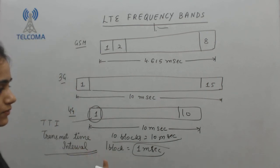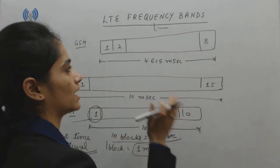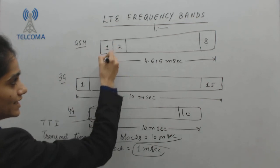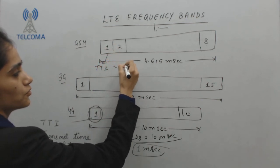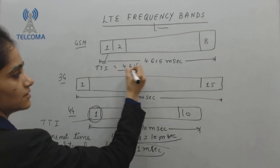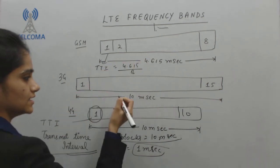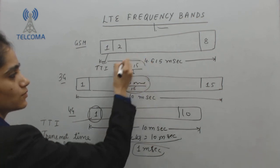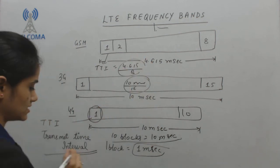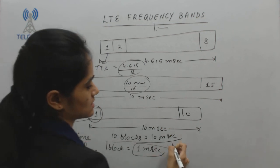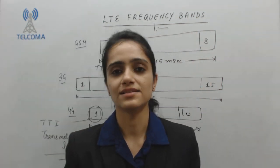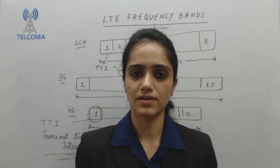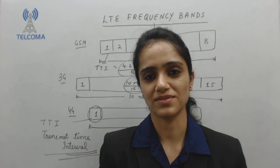You can also calculate the TTI of 3G and 2G for comparison. For 2G it is 4.615 divided by 8, and for 3G it is 10 milliseconds divided by 15. The TTI of 4G is shorter compared to previous generations. This is all for today — we will continue the rest in the next class. Thank you so much.